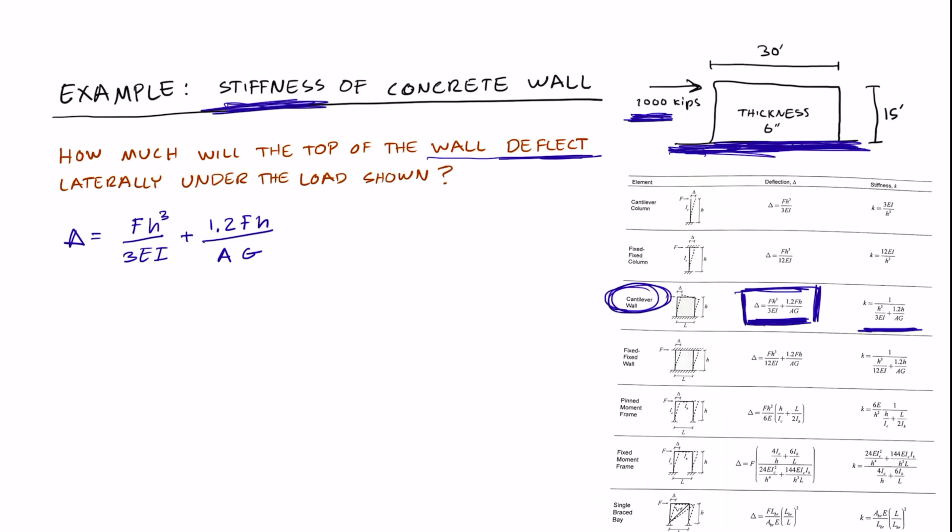We know the force is 1,000, and we know the height is 15 feet, but we need to convert feet to inches. So the height is 180 inches cubed, divided by 3. We'll have to use a table to look up the modulus of elasticity, and for concrete, that's going to be 3,500 ksi. And we need to find I.